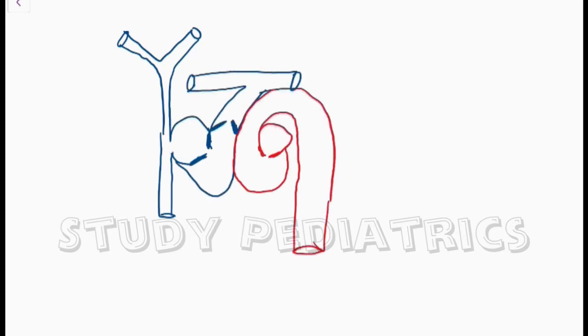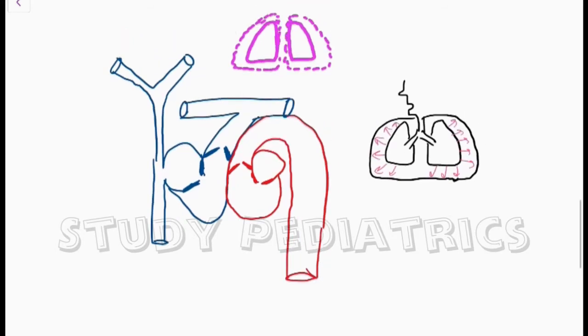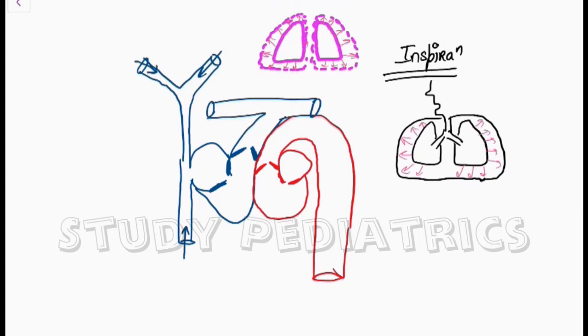Let's draw and understand this. During inspiration, our lungs expand and the volume of the thoracic cavity increases. This increase in volume causes suction of blood from both lower and upper end of the body. Hence, the volume in the right chamber of the heart increases, and this causes a delay in emptying of the blood in the right chamber, causing a delay in P2.